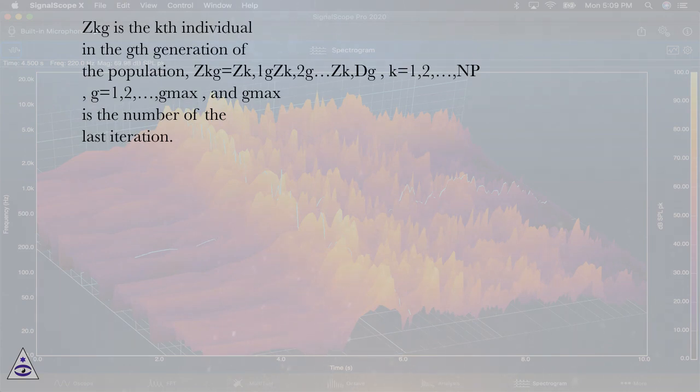Zk,g=Zk,1,g,Zk,2,g,...,Zk,D,g, where K=1,2,...,NP and G=1,2,...,Gmax, and Gmax is the number of the last iteration.